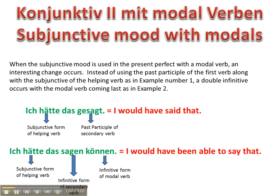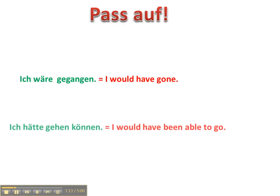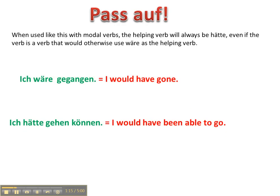So 'ich hätte das sagen können' means 'I would have been able to say that.' There's one thing you want to watch out for: when used like this with modal verbs, the helping verb in the subjunctive will always be hätte, even if the verb is one that would otherwise use wäre as the helping verb.